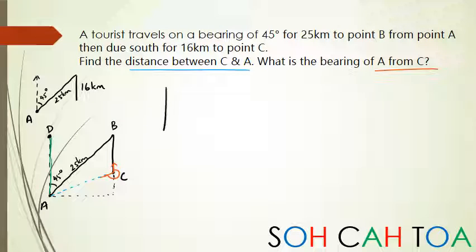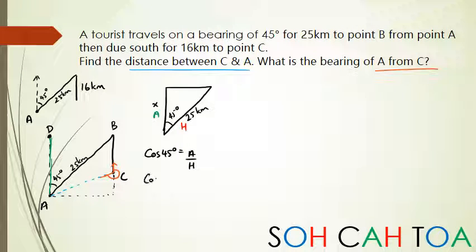In this situation, I've got 45 degrees, the unknown, and this is going to be 25 kilometers. Using SOHCAHTOA, this is hypotenuse and this is adjacent. So I have cos 45° equals adjacent over hypotenuse. Cos 45° equals x over 25, therefore x equals 25 times cos 45°, which is 17.67.